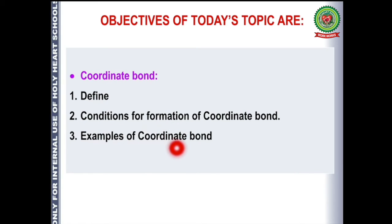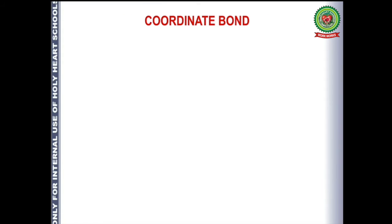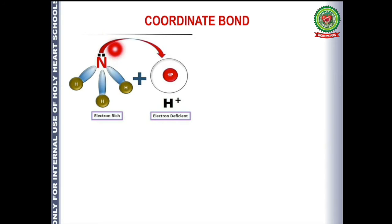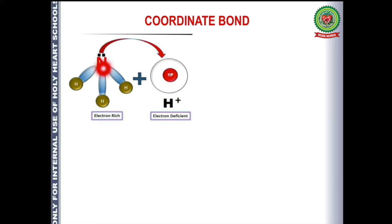We will also cover examples of coordinate bond and electron dot diagrams. First, let us take one example to understand coordinate bond. Supposing we have ammonia — ammonia is formed by sharing of electrons between nitrogen and hydrogen atoms. After sharing, a pair of electrons is left on nitrogen, so ammonia is electron rich. The pair of electrons left on nitrogen, not taking part in bond formation, is known as a lone pair.